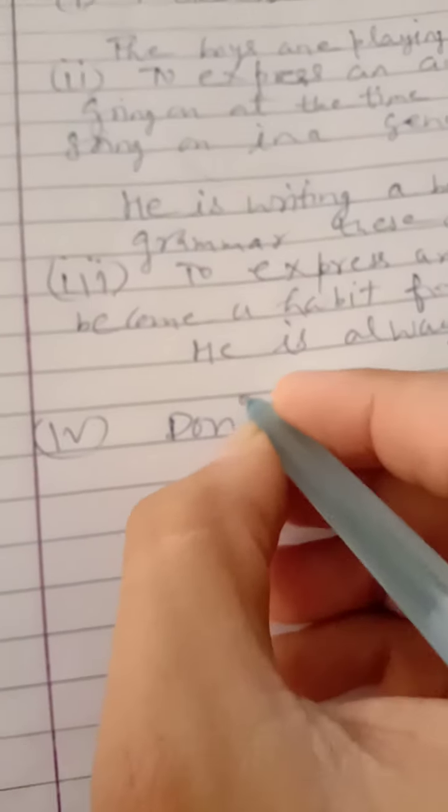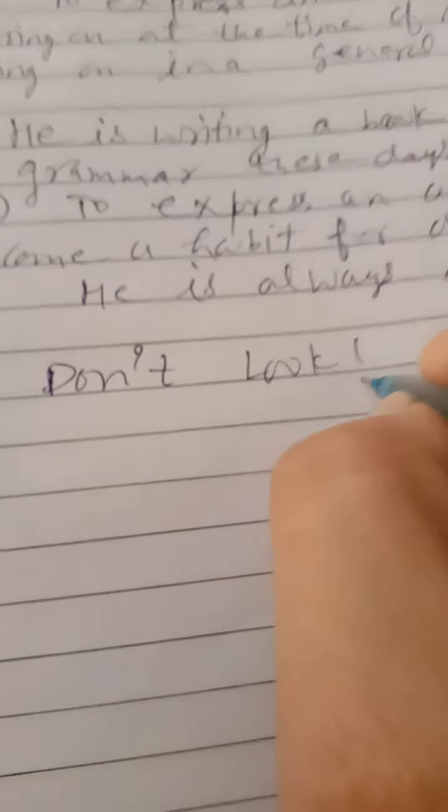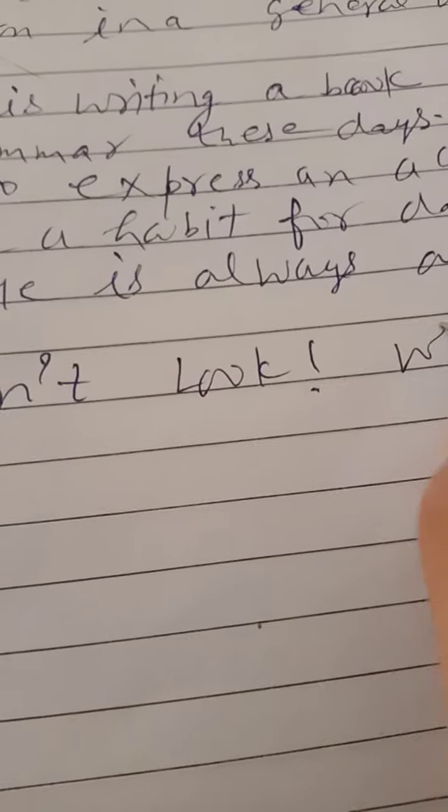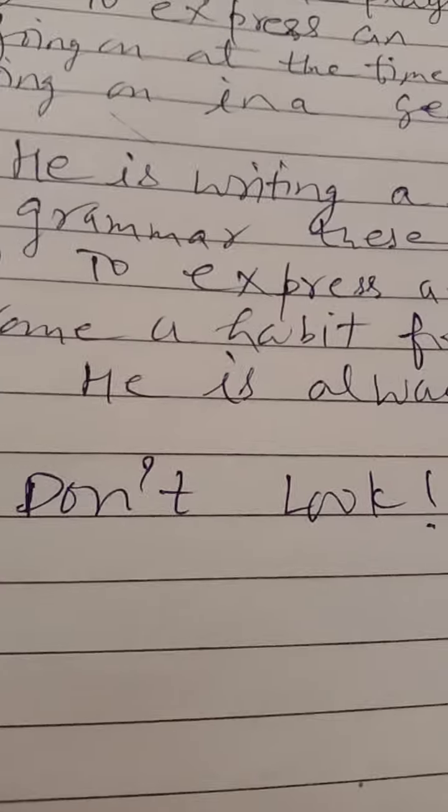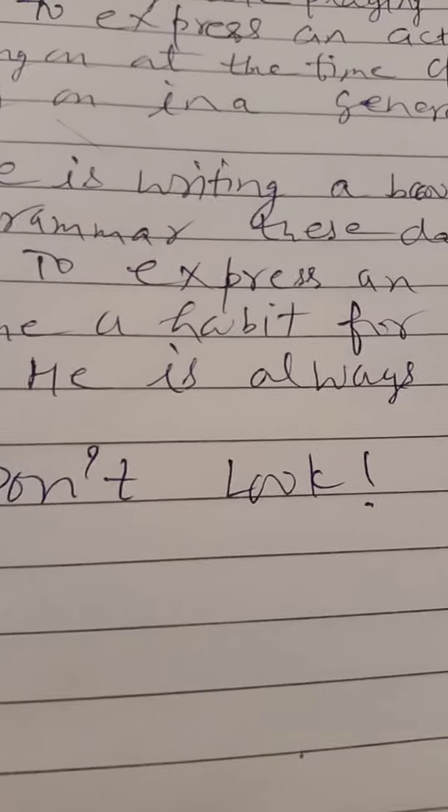Fourth point: हमारे पास कुछ words है. Don't, look, while, and still. अगर ये words हमें sentence में दिख जाएं, तो हमें present continuous sentence यूज करना है.